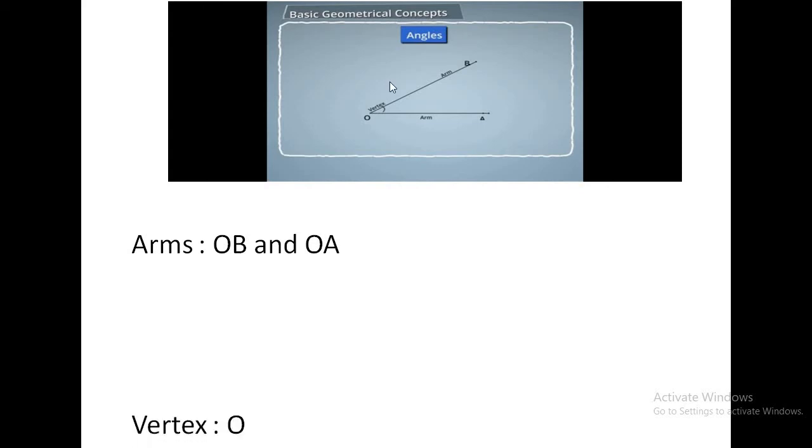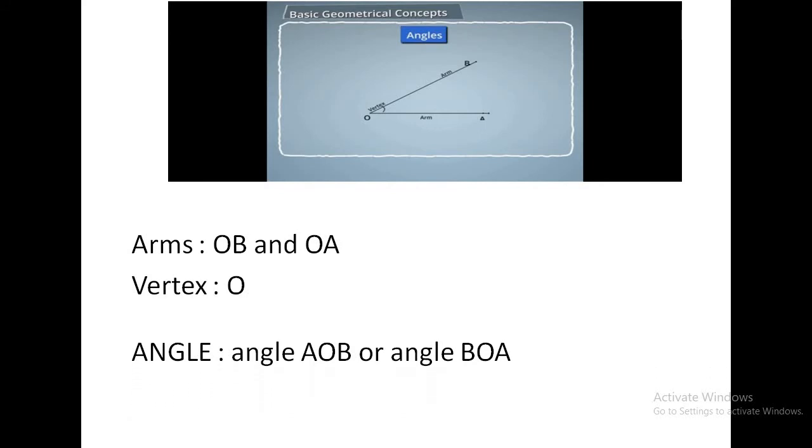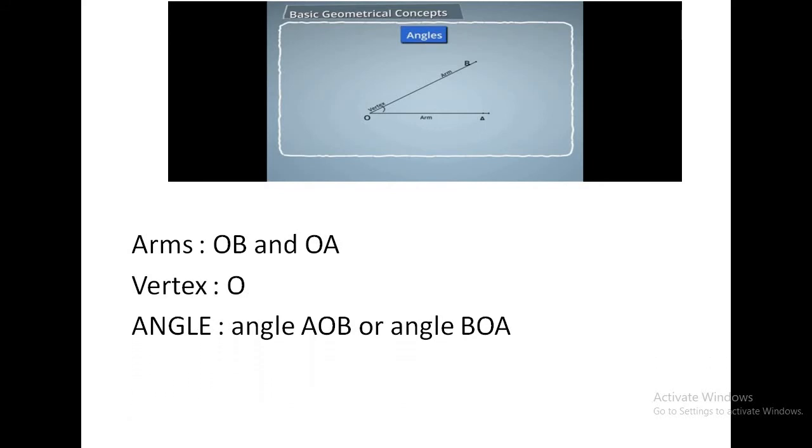And O is the vertex. So how can you write the name of the angle? It can be written as angle AOB or angle BOA. You can also use the symbol in place of angle, a small L mark symbol to name the angle.